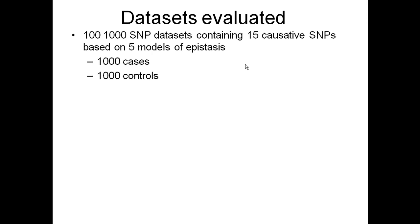We looked at 100,000 SNP datasets containing 15 causative SNPs based on five models of epistasis, with interactions ranging between two and five SNPs adding up to 15 causative SNPs. There were 1,000 cases and 1,000 controls. You can look at the paper we wrote to see exactly what these were.